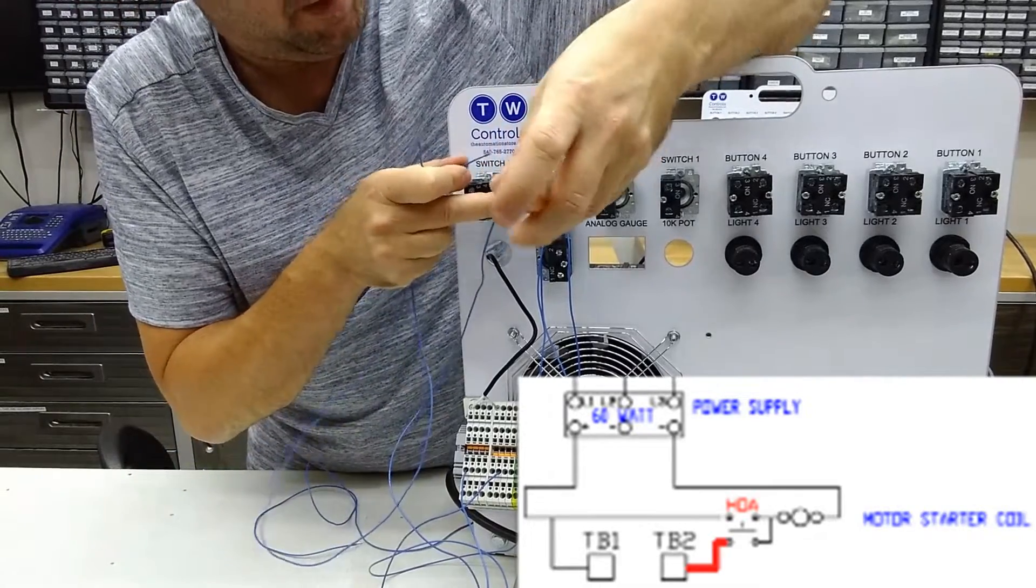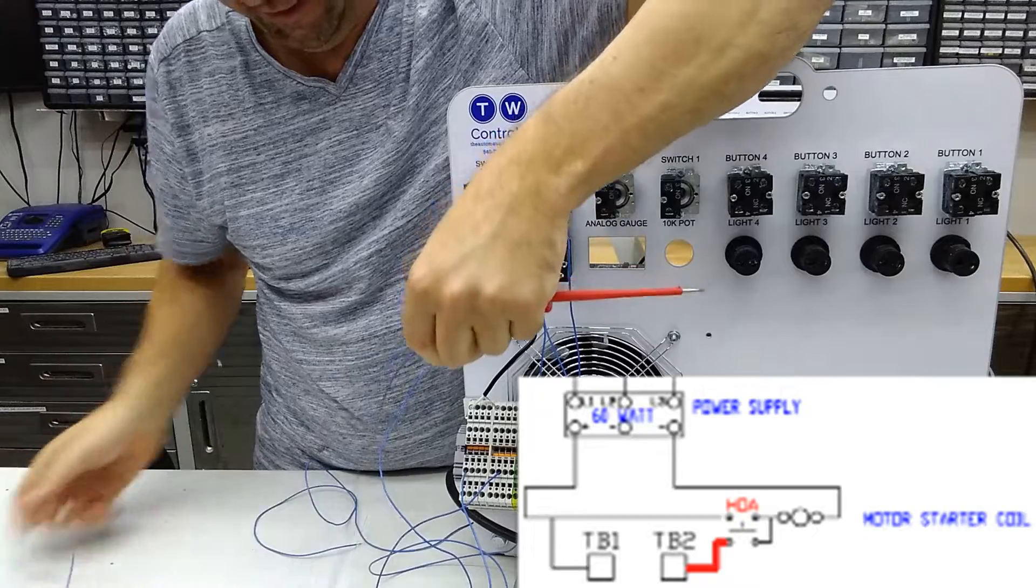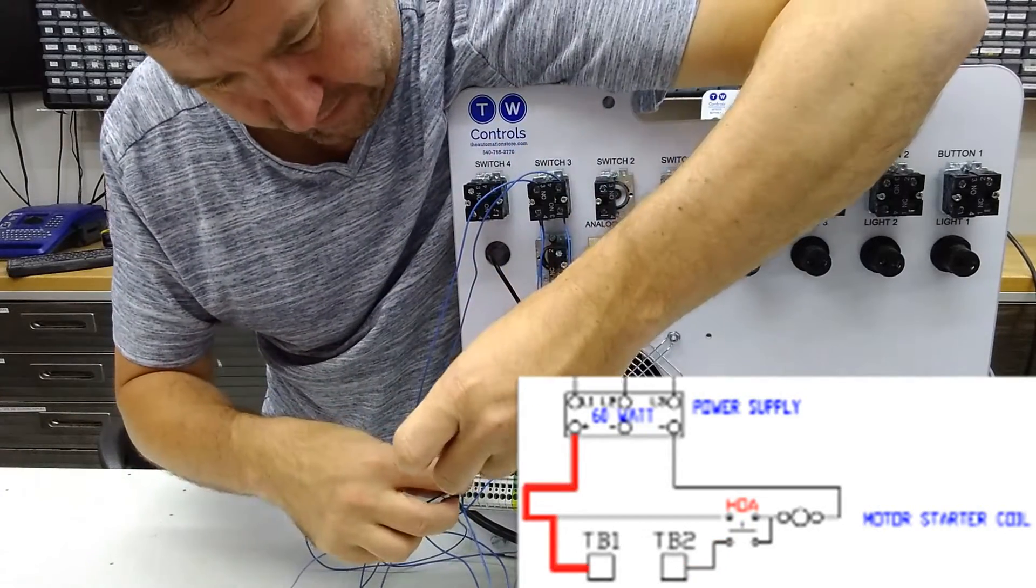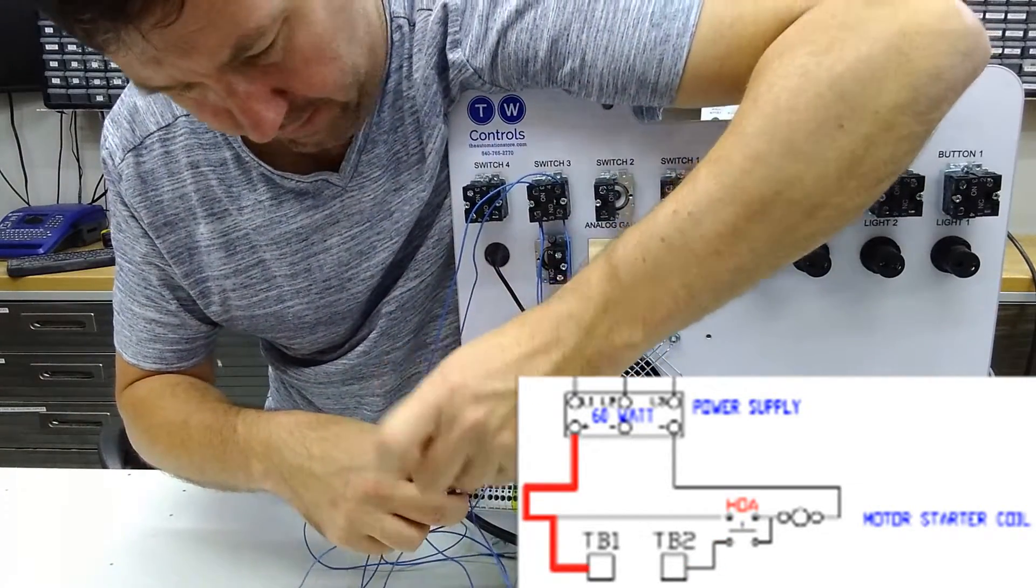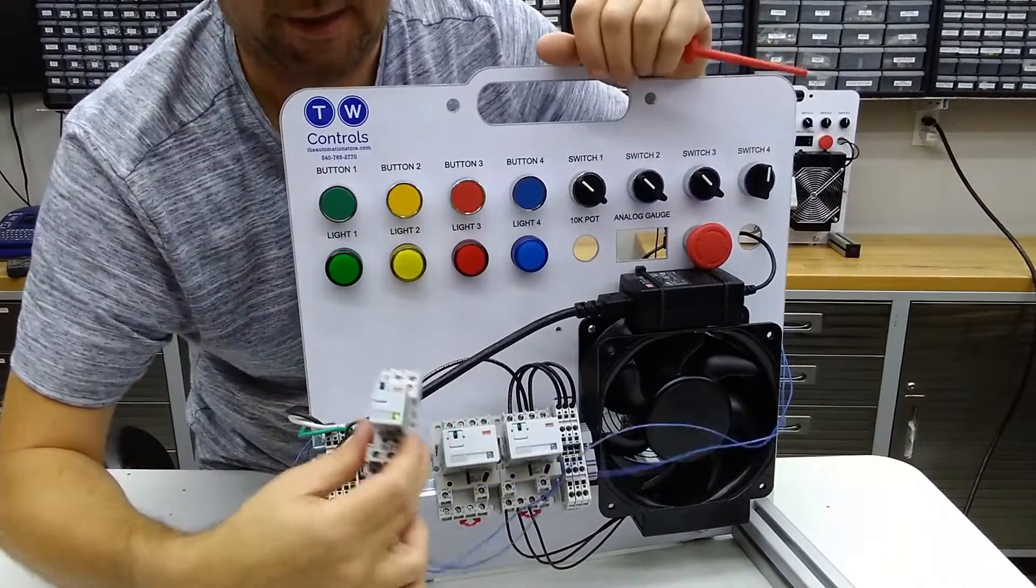So we will take a wire from our other contact and connect it. We'll just leave it loose. And then we will take a wire to our plus 24 volt. That will spin the trainer back around to the operating side. And here's our relay.